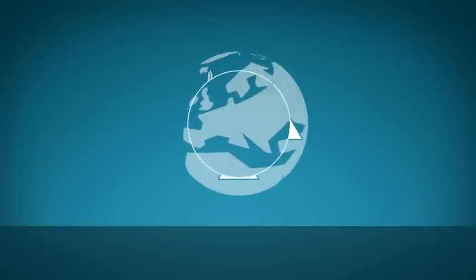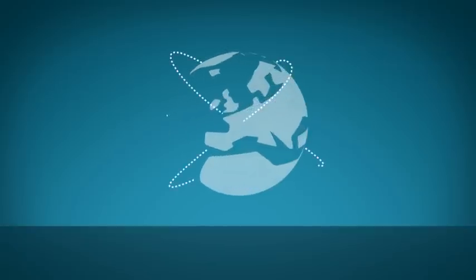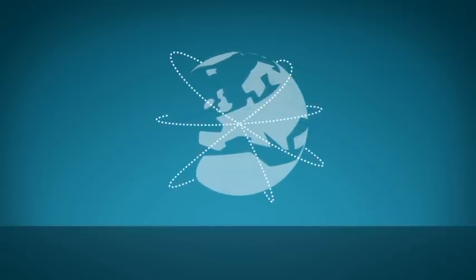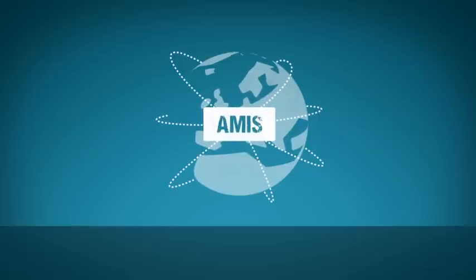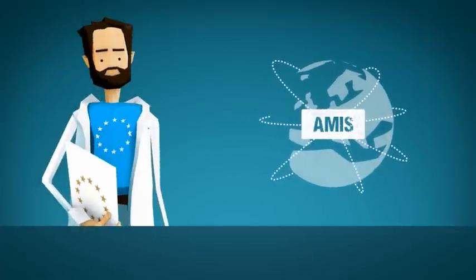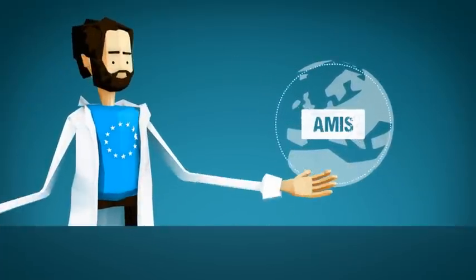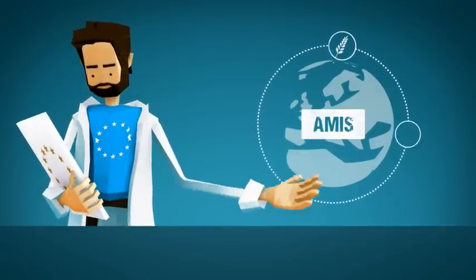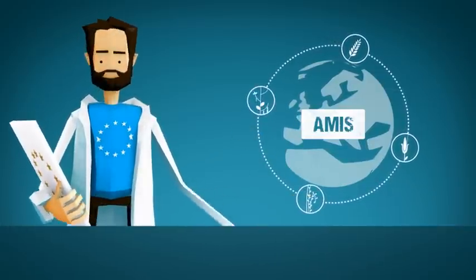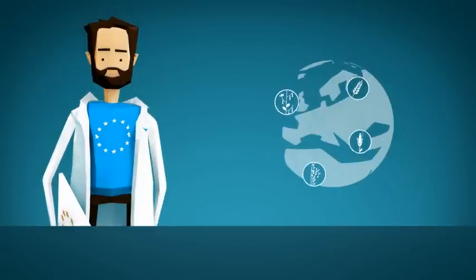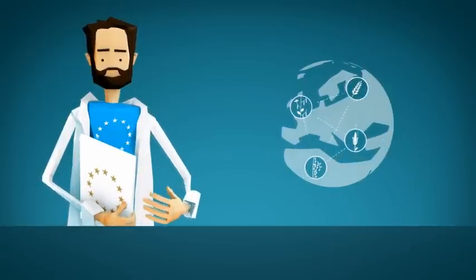To help create a more global picture of crop production, the G20 recently launched a new initiative called the Agricultural Market Information System, or AMIS for short. At first, the system will focus on the four most commonly grown crops worldwide: wheat, maize, rice and soybeans. The goal is to create coordinated responses across different nations and continents.